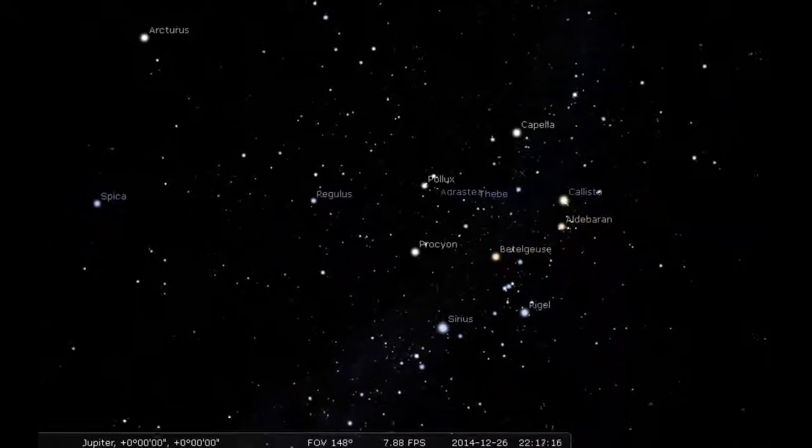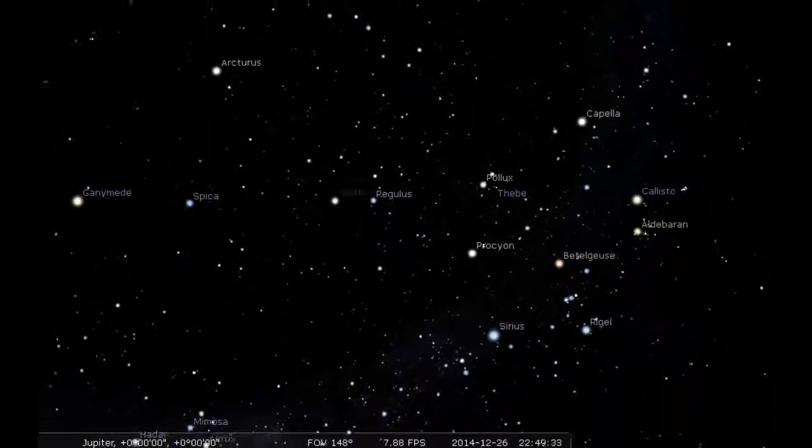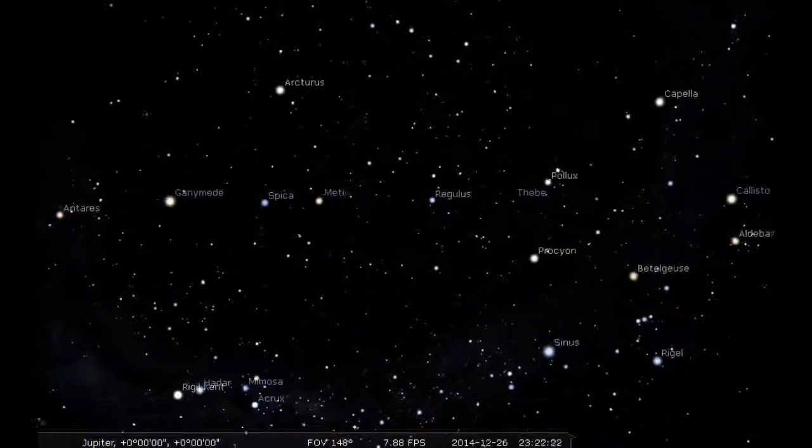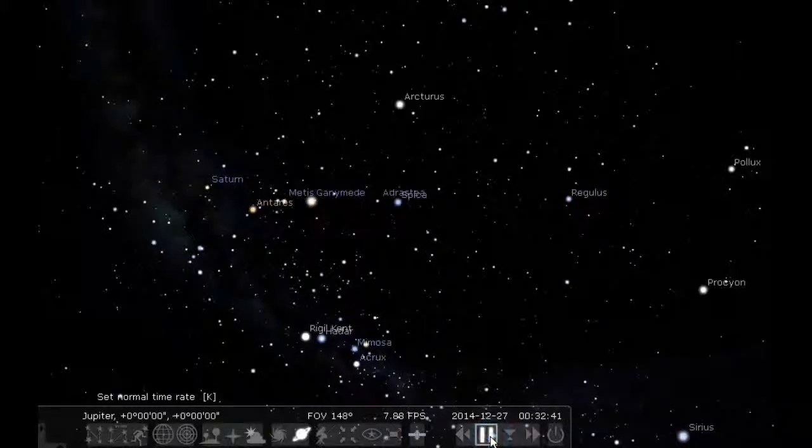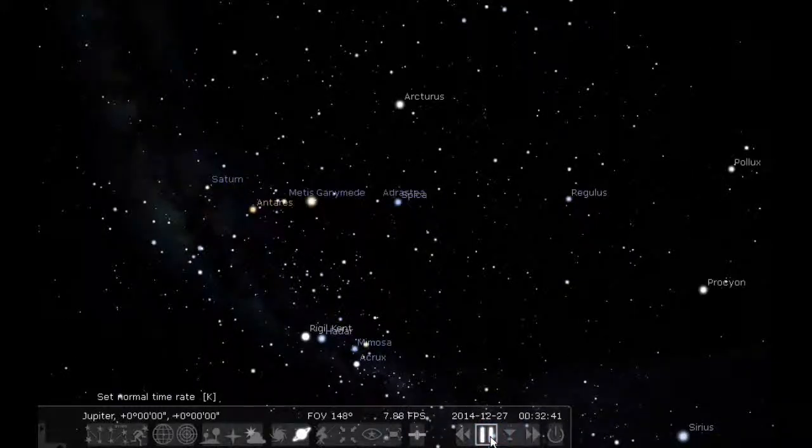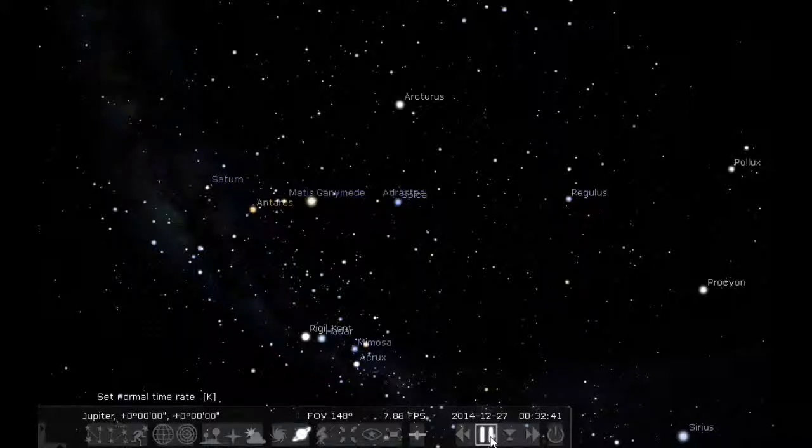This location is a longitude of zero degrees and a latitude of zero degrees. So sometimes we're not able to see everything that we want to see because we're just on the wrong side of the planet when that event occurs.